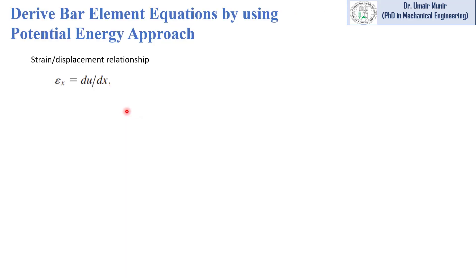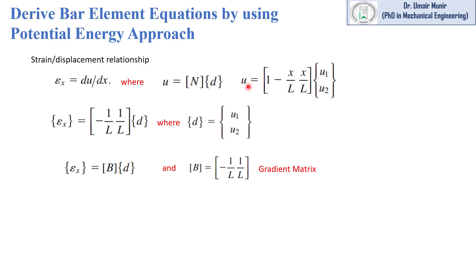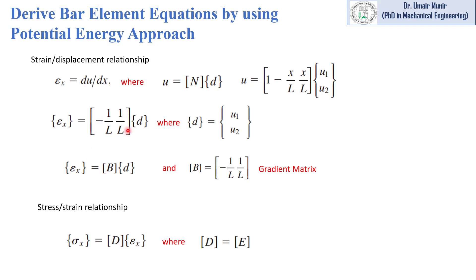Next we define the strain-displacement relationship. We have the linear displacement function u = N d, where N is the shape function matrix and d is the displacement matrix. If we differentiate u with respect to x, we get the strain epsilon x. When we differentiate the u equation, we get epsilon x in matrix form where d is the displacement matrix and this resulting matrix is called the B matrix — the gradient matrix.